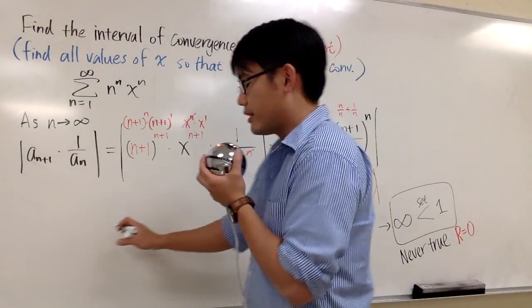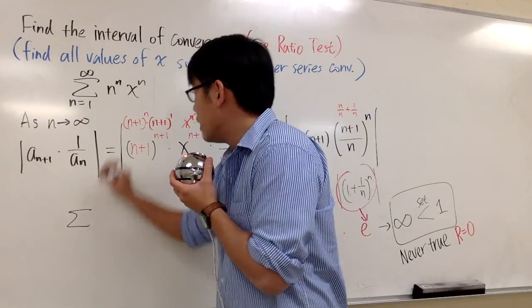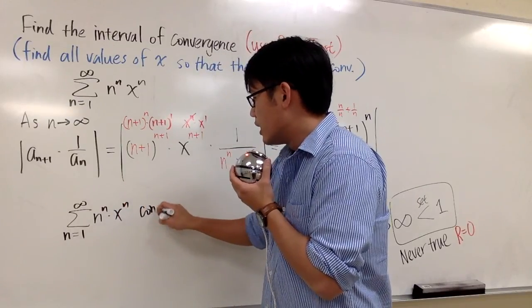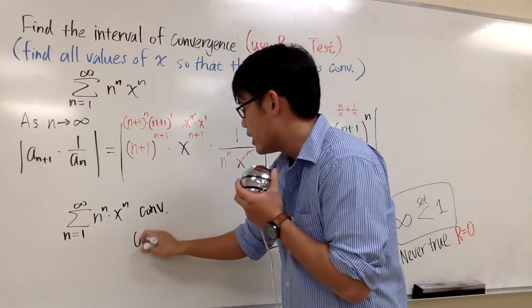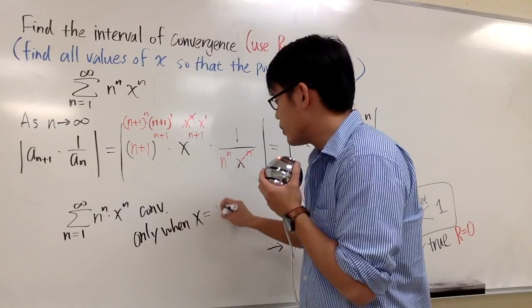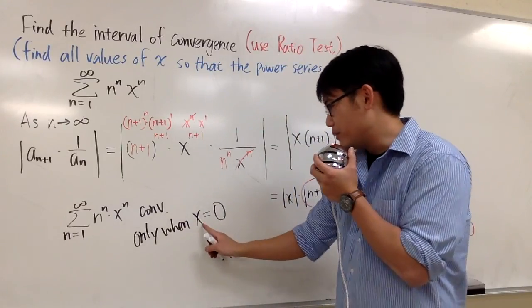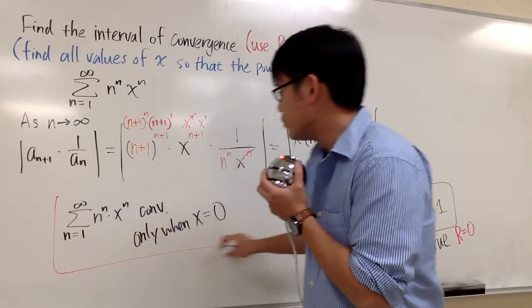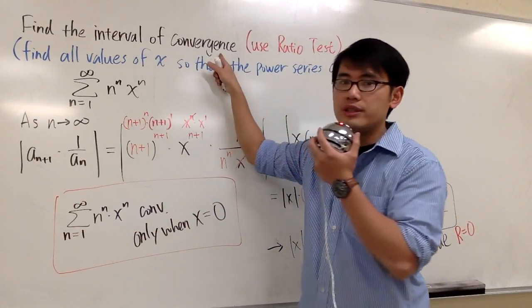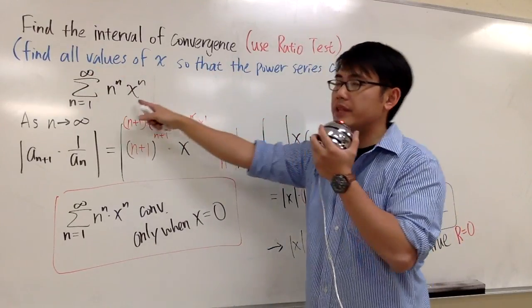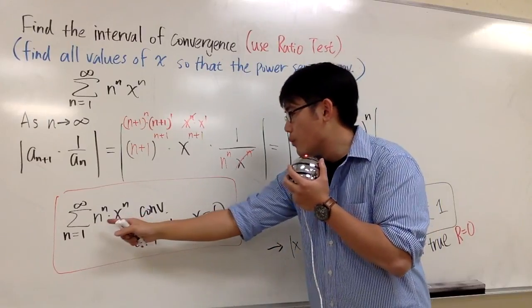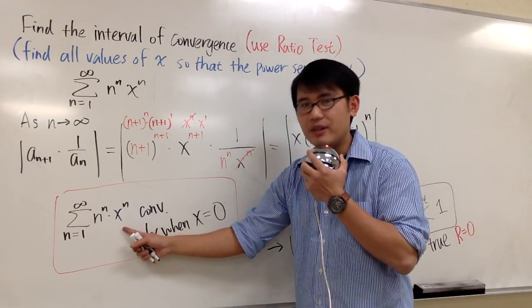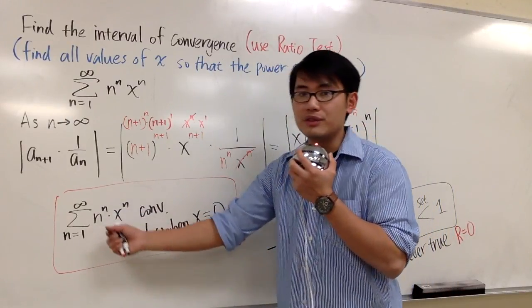The power series n^n times x^n still converges at one number only: it converges only when x is equal to 0. Because if you plug 0 into here, you are pretty much just adding a bunch of zeros. A power series will always converge at the center of the power series, and the center here is 0.